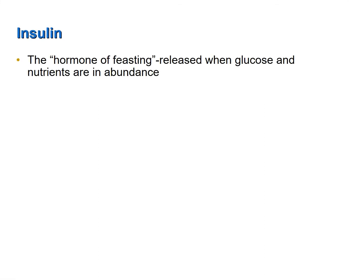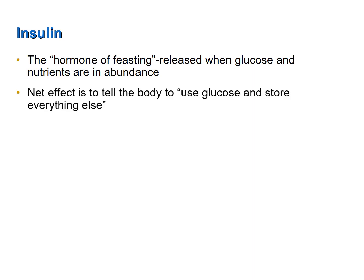Insulin is often referred to as the hormone of feasting, because it's released when glucose and other nutrients are in abundance in the blood — in other words, while you're eating and shortly after you have consumed a meal. Basically, what insulin says to the body is: use glucose preferentially as a source of energy, and spare and store everything else. Use the amino acids to make proteins, and use fatty acids and glycerol to make triglycerides.